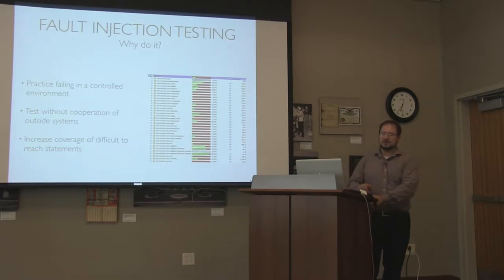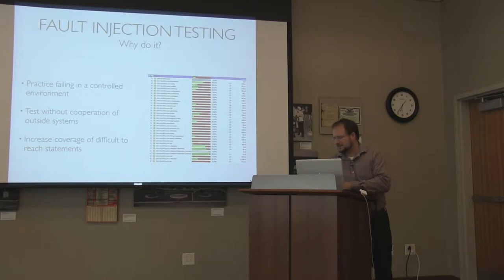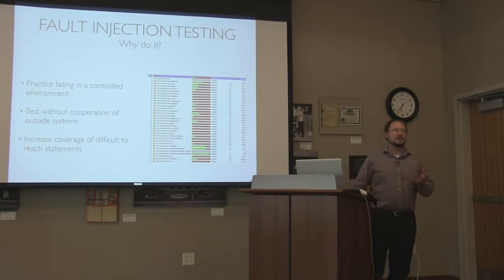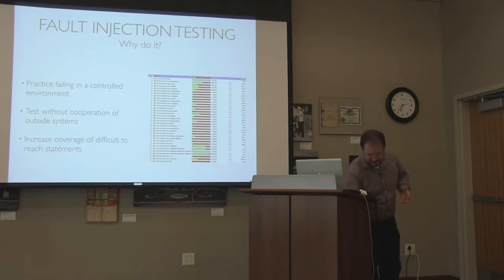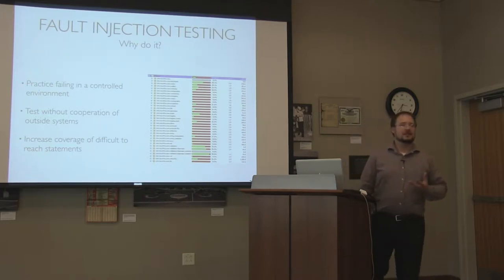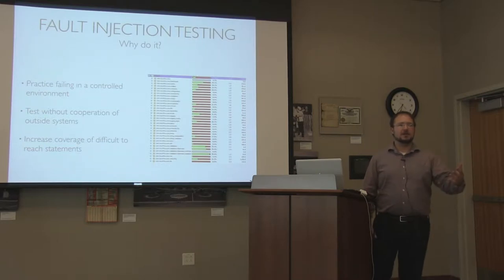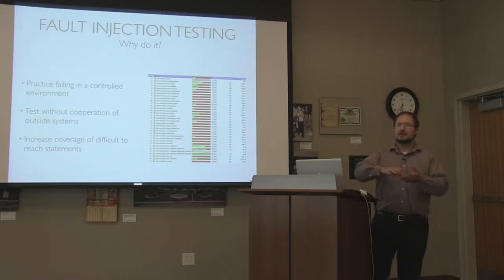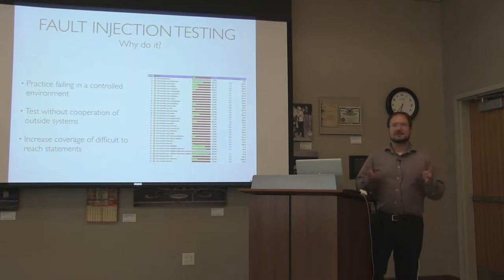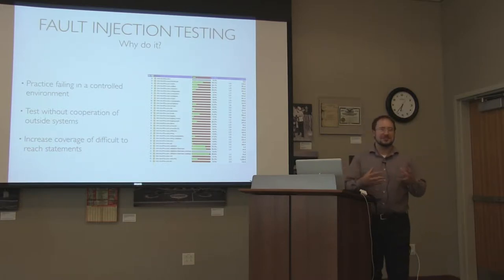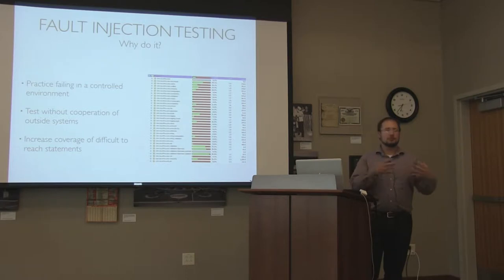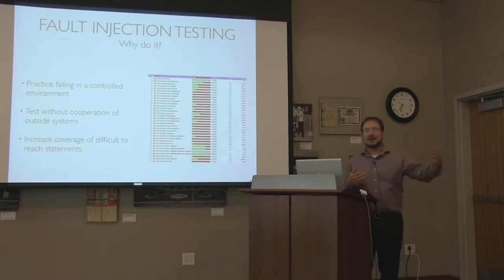A lot of times you're not going to get cooperation with some of the systems you need to test against for faults. Think about an FTP server run by some corporation outside your own that's constantly hanging on you. You can see it in the stack trace - you do a JStack and you see you're sitting right there at socket.read. How do I simulate this? How do I make sure my application doesn't wait for 30 seconds? How do I prove that my application is configured not to wait, in my unit tests, without having to go all the way out to production?